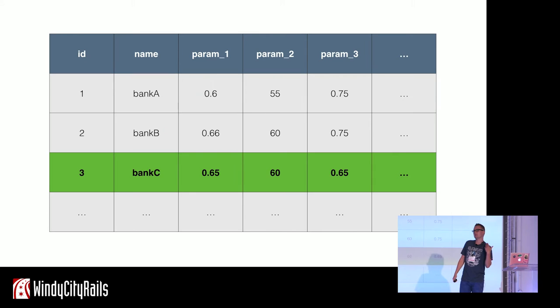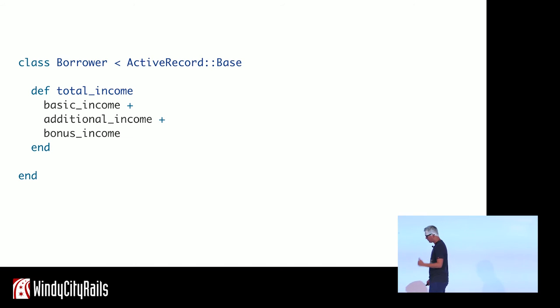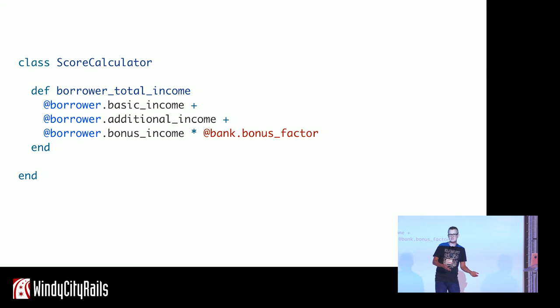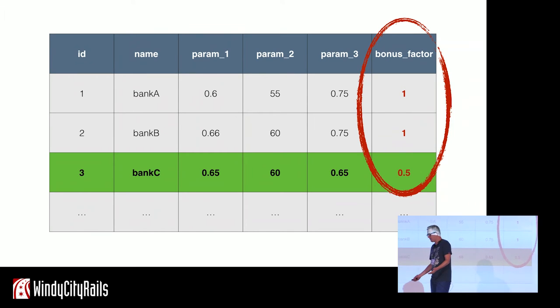Well, it doesn't, actually. It turns out that banks want to do things differently here and there. If you remember our total income method we had on the borrower model, well, a new bank comes in and says, I want to divide your bonus income by two. So we have to pull it back and introduce another parameter to the bank class, to the bank model. Which is not that bad, I guess. It's just a column in the database. But if you think about it, we have to also introduce the same parameter for all of the previous banks, which doesn't really make sense in the context of their domain. Like, they don't have this bonus factor. But anyway, we do it. It's the simplest thing we can do. Let's just move on with this.